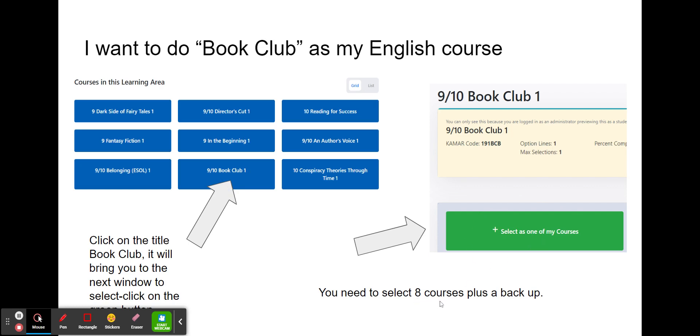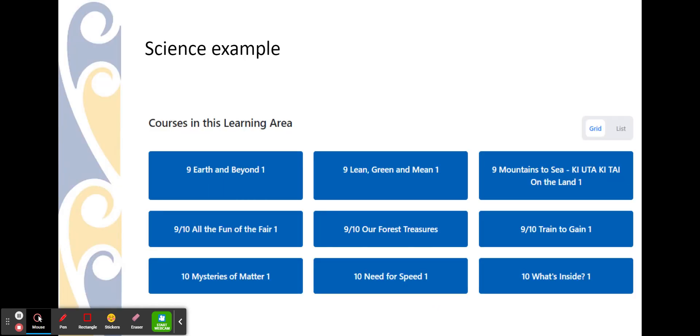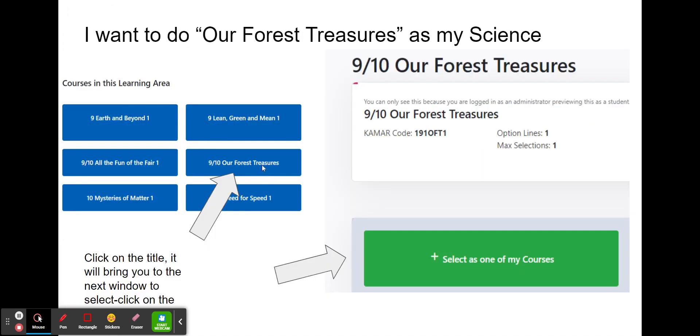Remember, you need to select eight courses. In science, you decide you want to do Our Forest Treasures. Again, click on this. It brings up the screen for you to click the green button.